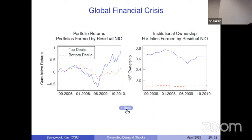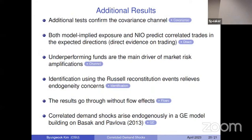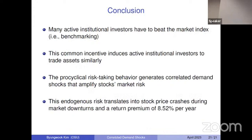I have additional results but for the sake of time I'll conclude. My paper starts from the observation that many active fund managers have a similar market index to beat. I show that this common incentive generates pro-cyclical risk-taking behavior among them, which amplifies stocks' market risk. This amplification translates into stock price crashes during bad times, including the global financial crisis and COVID-19 crisis. This risk commands a risk premium of up to 8.5% per year. Thank you.